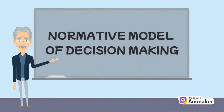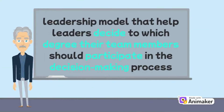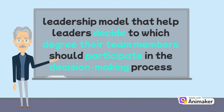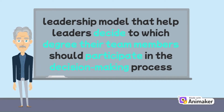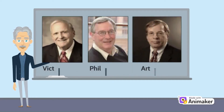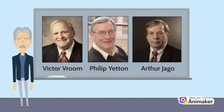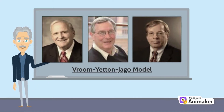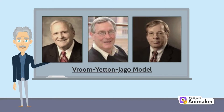The Normative Model of Decision Making is a leadership model that helps leaders decide to which degree their team members should participate in the decision making process. It is normative because it recommends that leaders adopt a certain style based on prescription of the model. It was developed by Victor Vroom with the collaboration of Philip Yetten and Arthur Jago, also referred to as the Vroom-Yetten-Jago model.